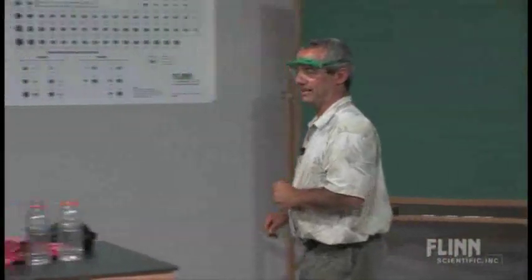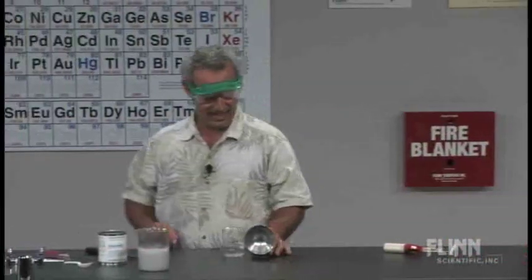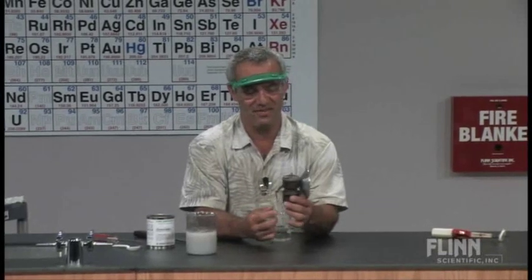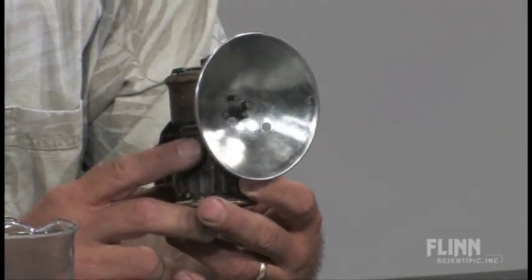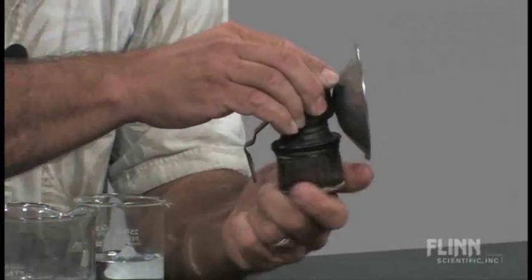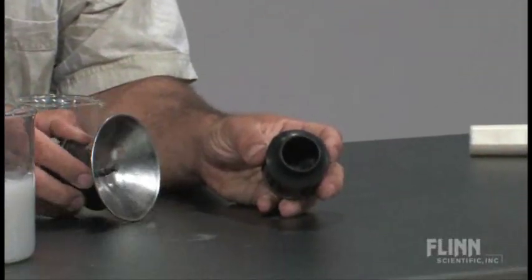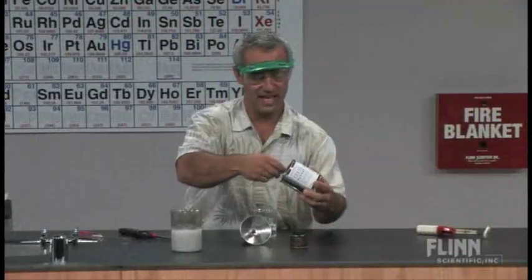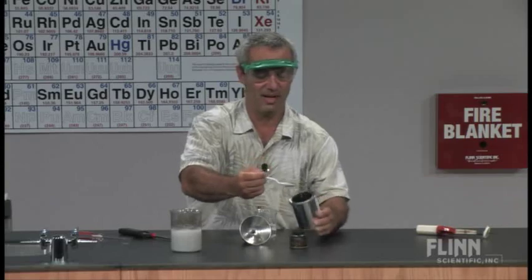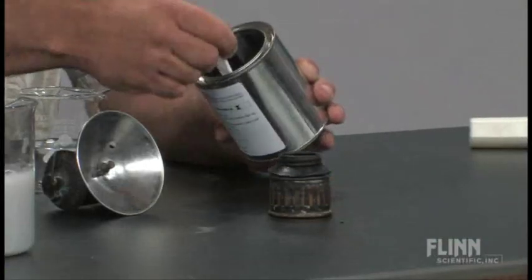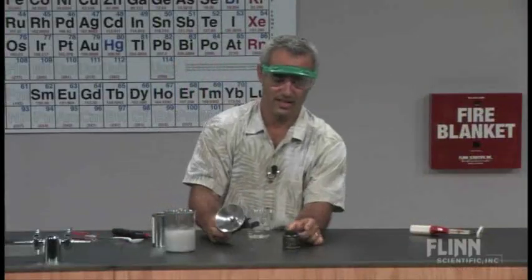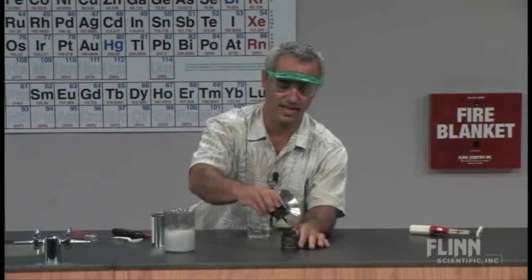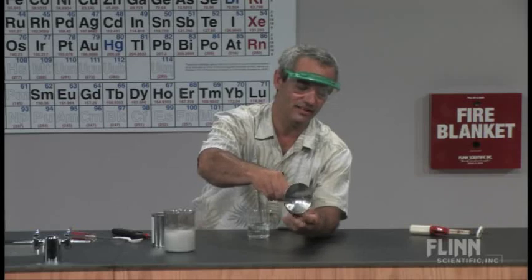I have a couple more demonstrations that go along with that. I had read about these but didn't know where to come across one until I went on eBay and found this — an old carbide lamp. The way it works is just like that. This was used by miners back before they had flashlights. It's a really easy construction. Down here is the chamber in which you put the calcium carbide. I'll put some down in there. There's a little gasket here that's keeping that airtight, and I'll screw that on there for a nice seal.